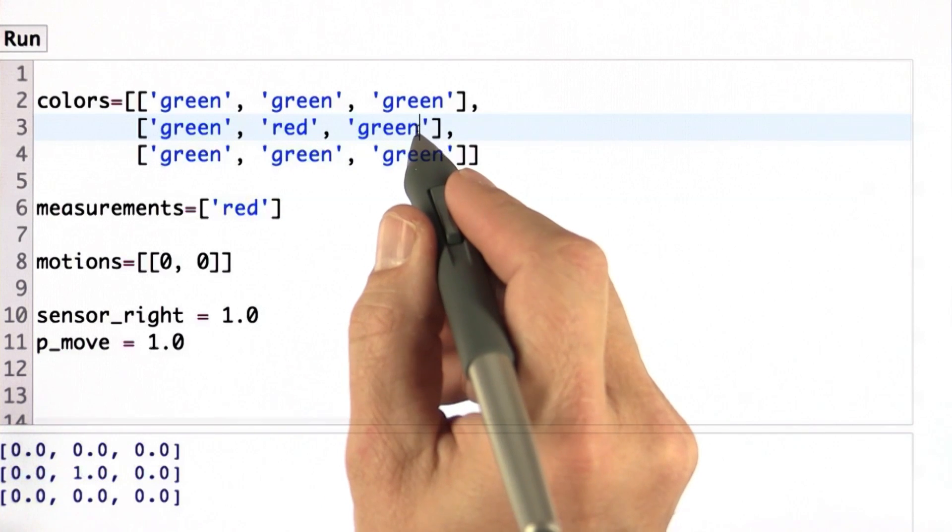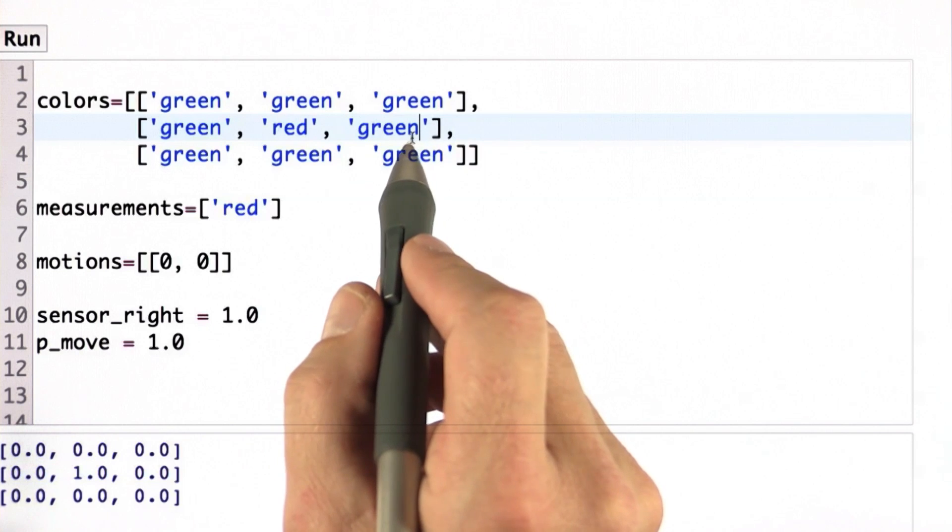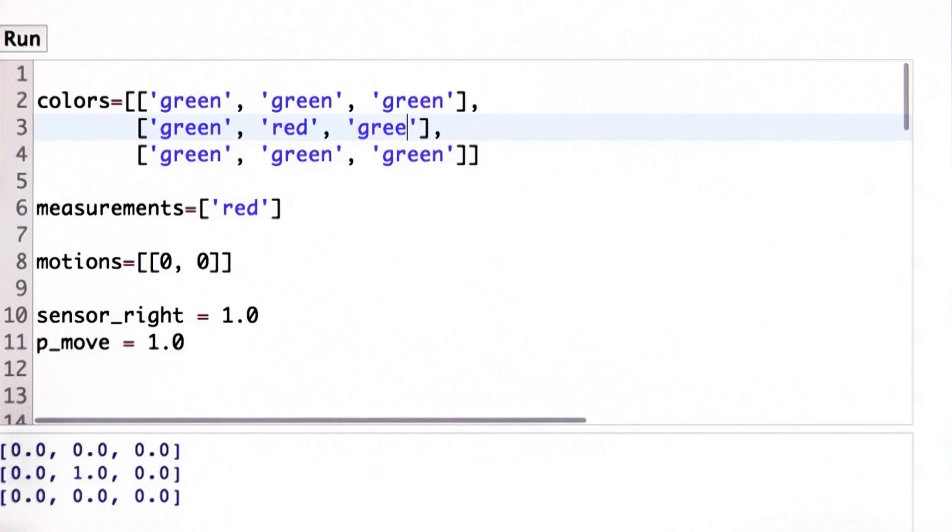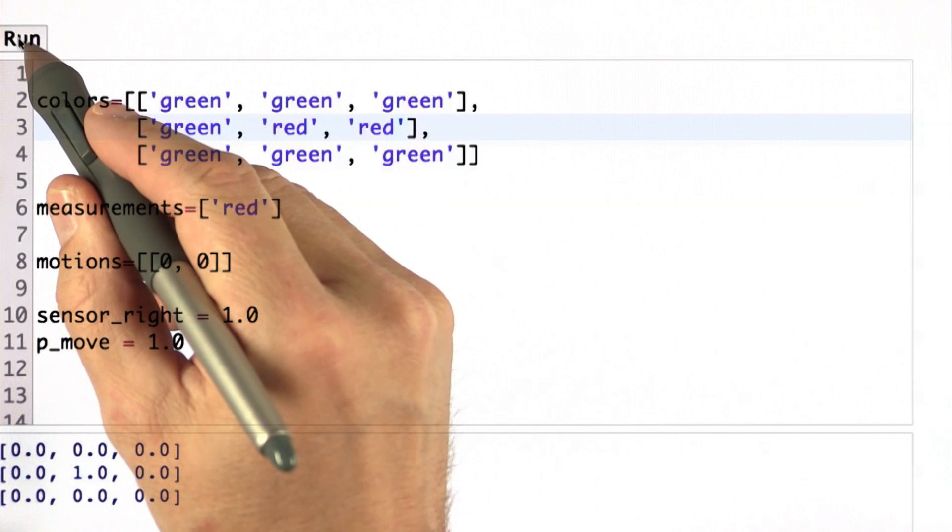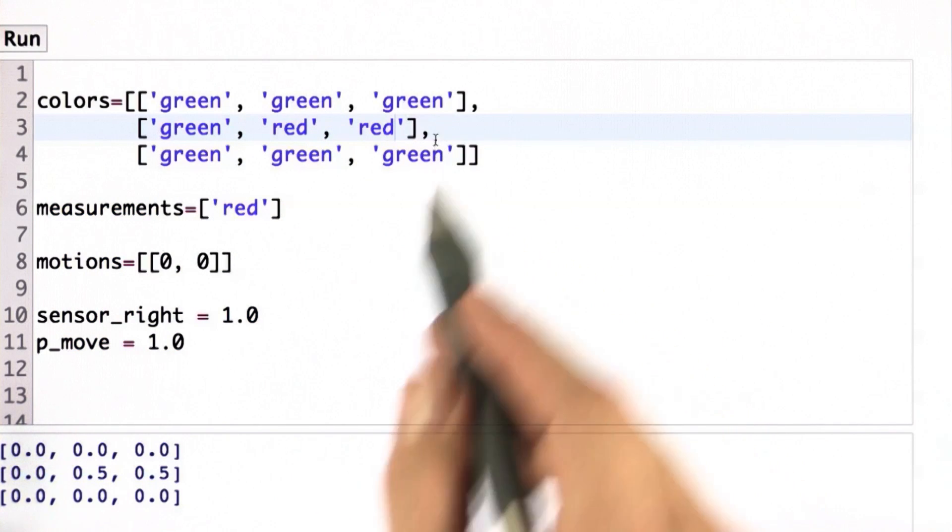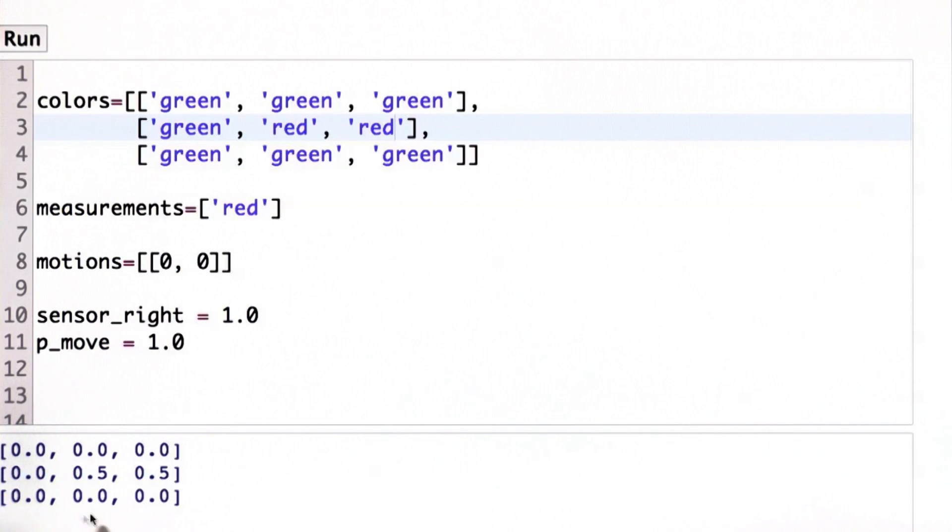Let's modify the world. Let's make this grid cell over here red as well. And then now let's just rerun the code. And what we get is a matrix just like the previous one, but now we have two winning grid cells, both of which have a 0.5 probability so that all the probabilities add up to 1.